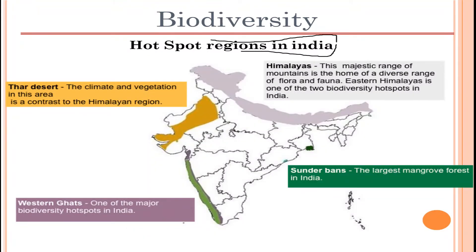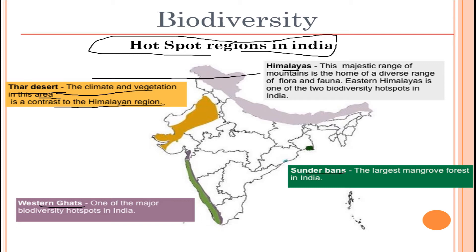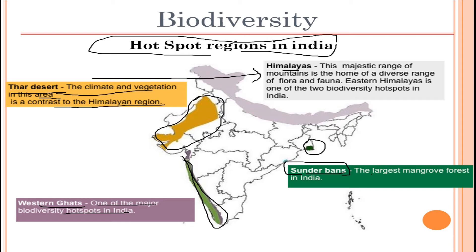Talking about hotspot regions in India: we have the Thar Desert, Western Ghats, Himalayas, and Sundarbans. The Thar Desert is a desert whose climatic and vegetative conditions are in contrast to Himalayan regions — very dry. The Western Ghats are one of the major biodiversity hotspots in India, covering the western coastal part. The Sundarbans are in West Bengal and form the largest mangrove forest in India, with a huge number of organisms present.